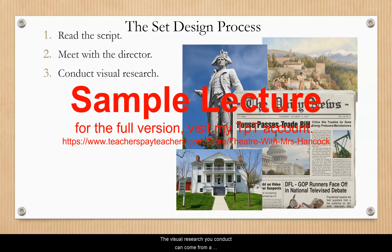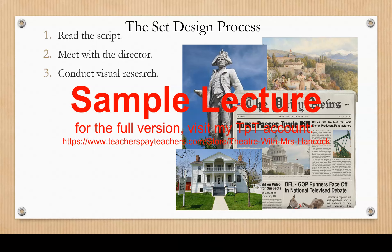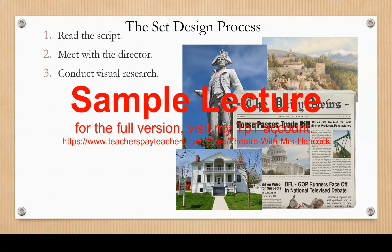The visual research you conduct can come from a variety of sources. If you were designing a play set in the 1700s, then it would probably be helpful to look at architecture and paintings from the period. If it is a modern day play, then newspapers, magazines, and photography are probably going to be where you draw your research from.